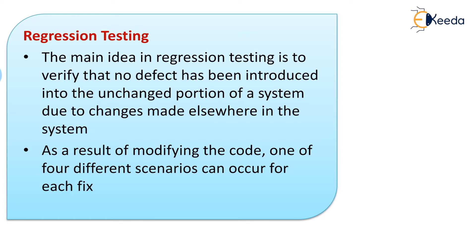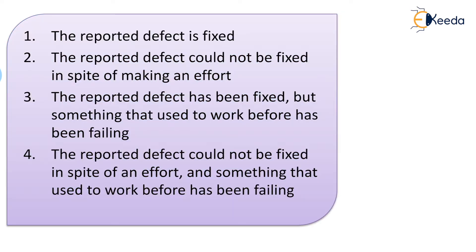As a result of modifying the code, one of four different scenarios can occur for each fix. First, the reported defect is fixed. Second, the reported defect could not be fixed in spite of making an effort. Third, the reported defect has been fixed but something that used to work before has changed. Fourth, the reported defect could not be fixed and something that was working earlier is not working properly.